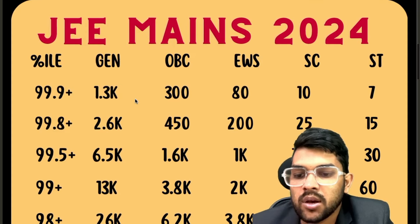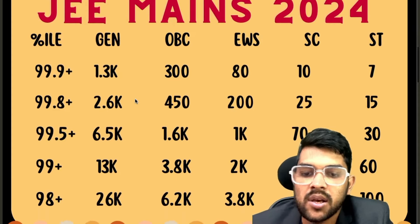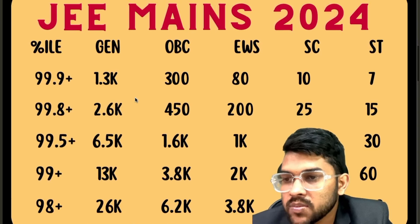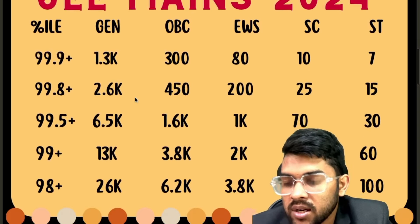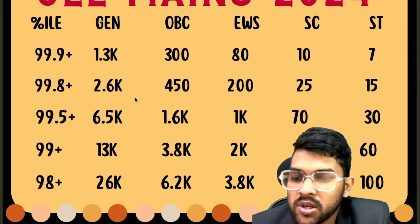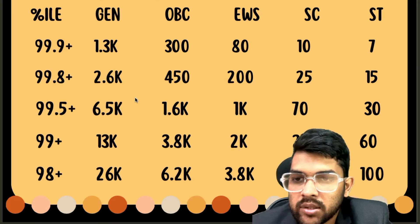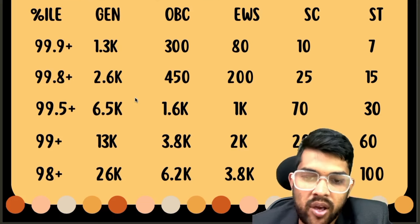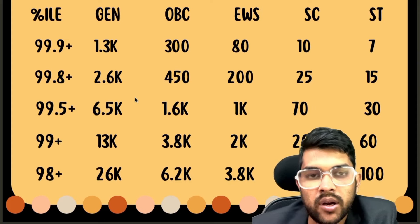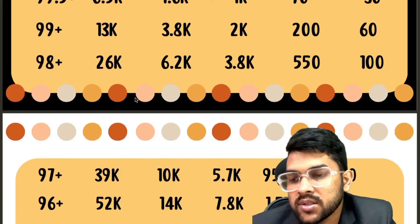For 99 percentile: General 13000, OBC 3800, EWS 2000, SC 200, ST 60. For 98 percentile: General 26000, OBC 6200, EWS 3800, SC 550, ST 100.